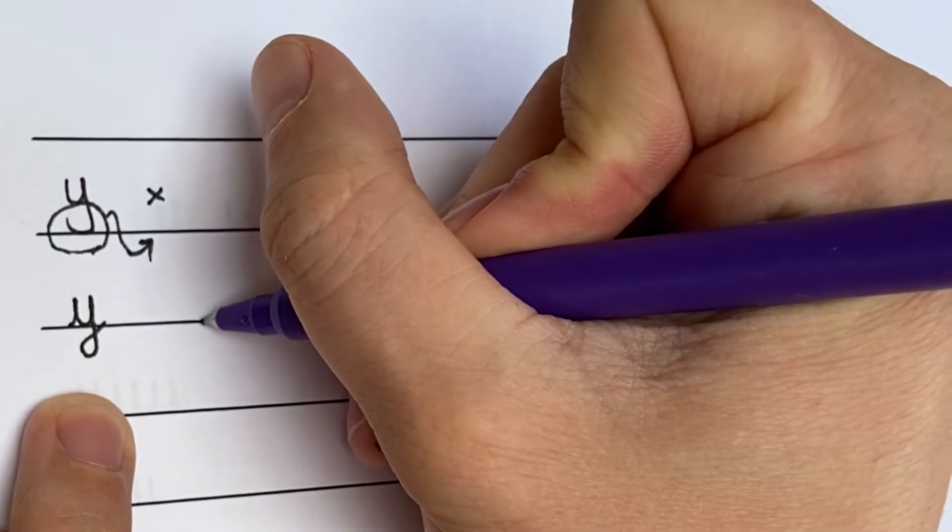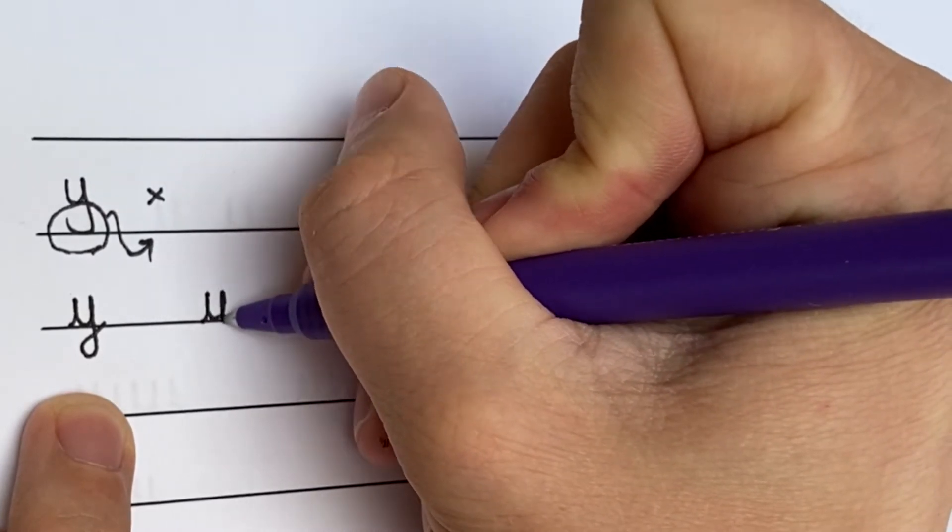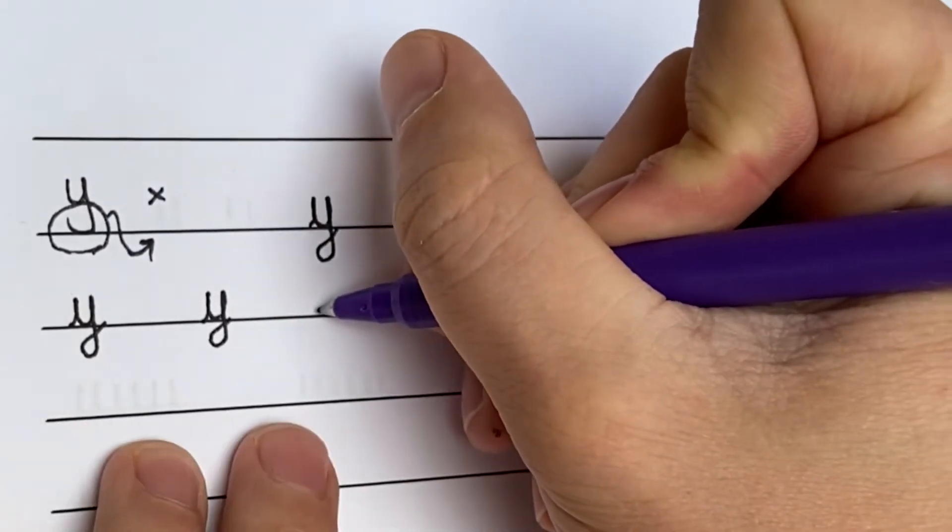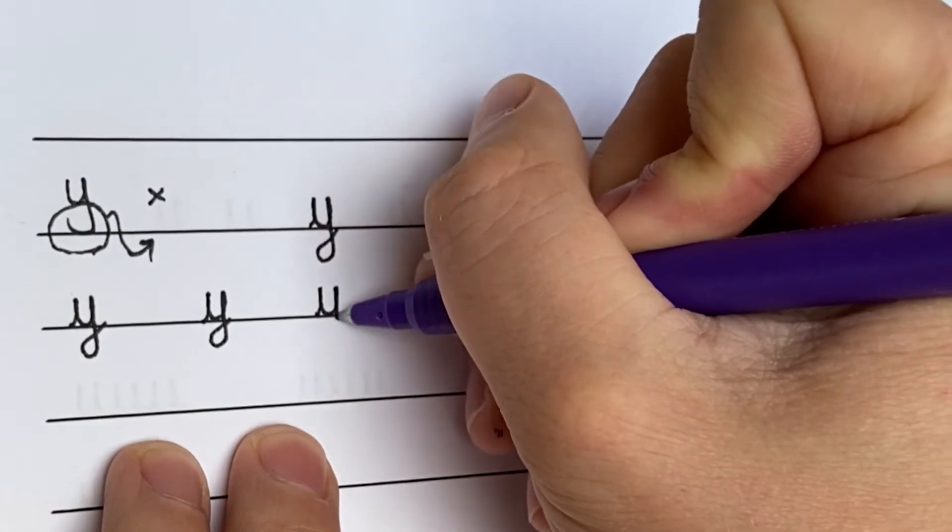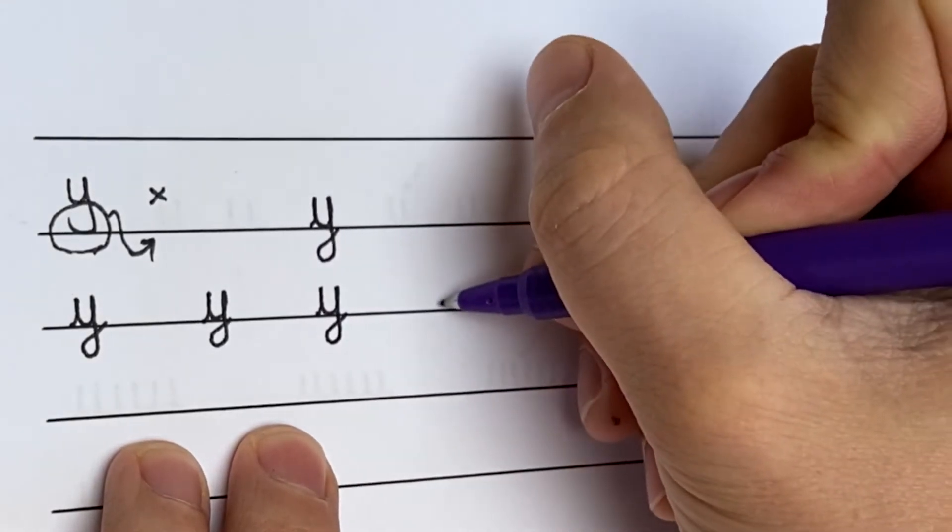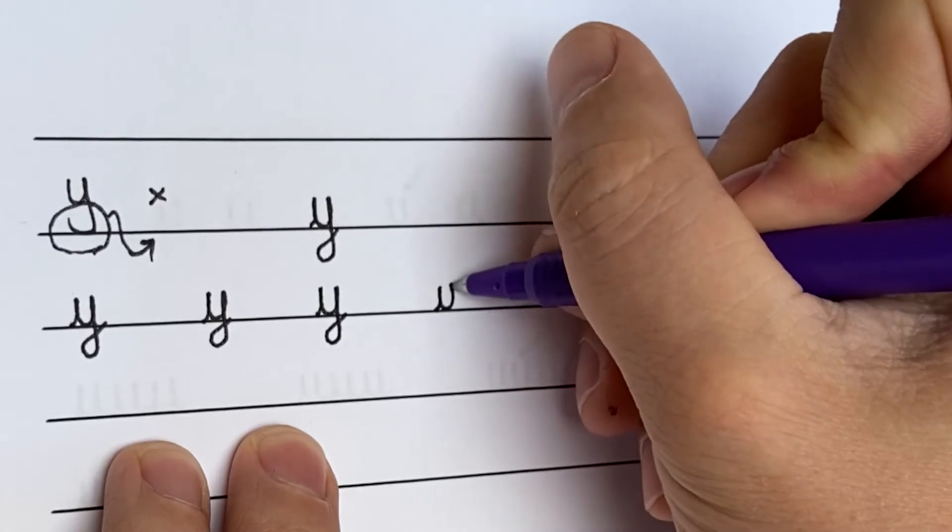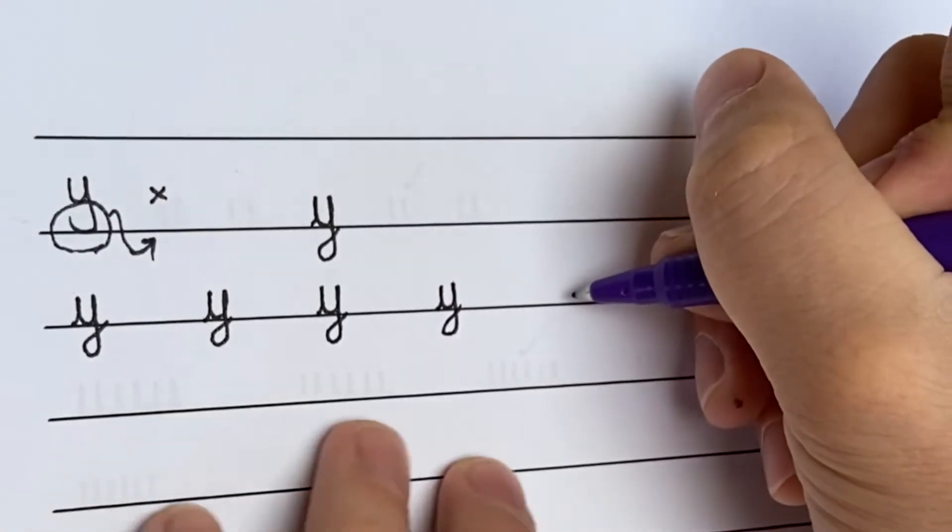So we start on the line. We go up, down, round, up, down, under, loop and hook. Making sure our letter Ys aren't too big. Making sure the tail of our letter Y is underneath the line.